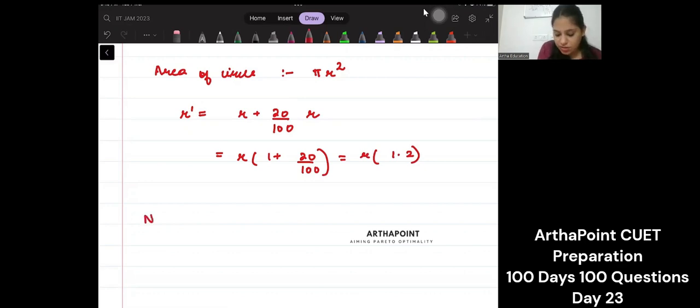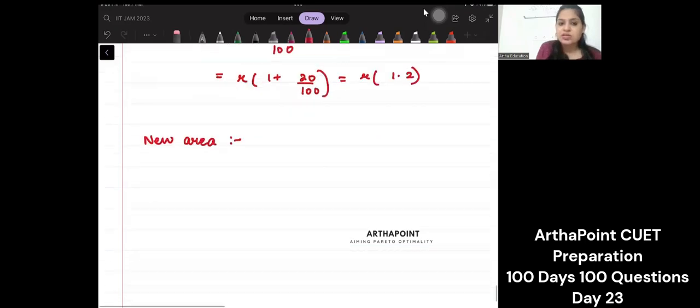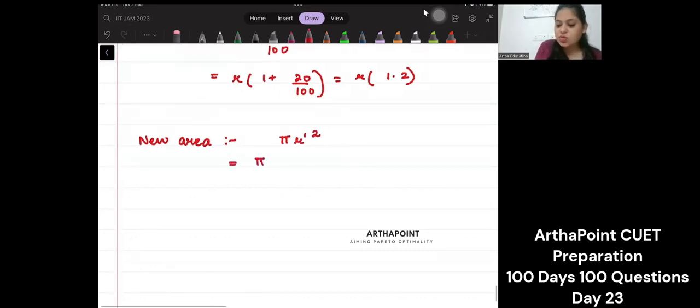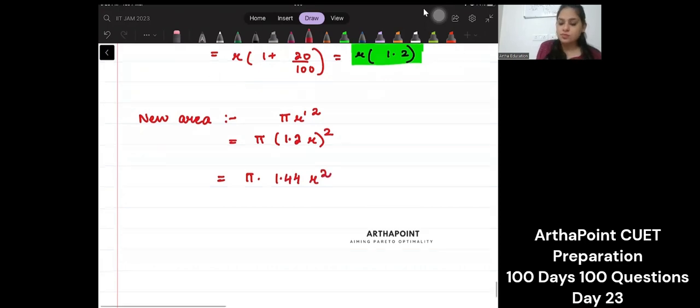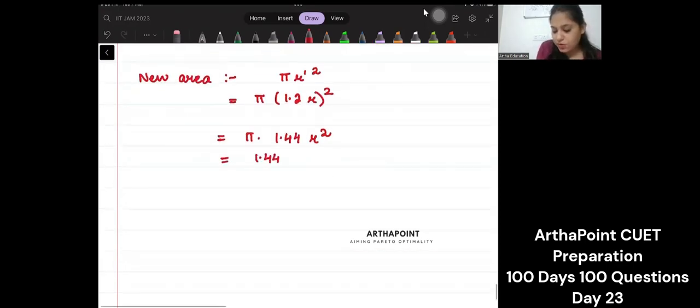What will be your new area? Your new area is going to be π r dash squared. So it is π times the new r, which is initial r into 1.2. So it is (1.2r)² = π(1.44)r² = 1.44πr². This will be your new area.